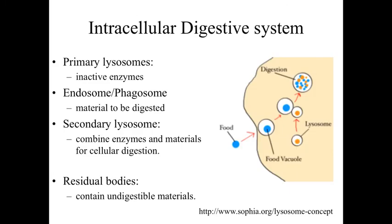The lysosome has the enzymes and acids for breaking down materials. An endosome or phagosome is a membrane-bound vesicle that has brought in some material from the outside. We combine the primary lysosome, with its enzymes, with the phagosome, which has material to be digested, to form a secondary lysosome where the enzymes and materials are combined and broken down. In some long-lived cells, we may have what are referred to as residual bodies — secondary lysosomes packed with materials that can't be digested — and that's going to be an identifying characteristic of things like neurons.